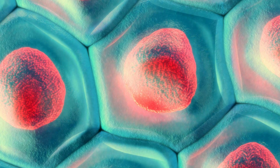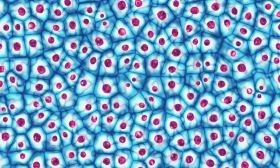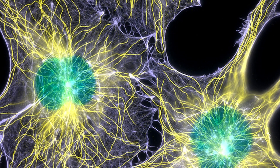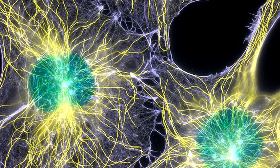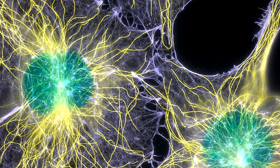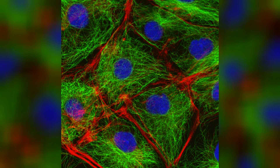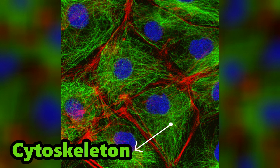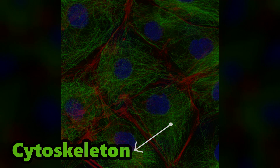In this way, the cell membrane acts as a communication hub, coordinating the activities of individual cells and ensuring the overall functioning of tissues and organs. Additionally, the cell membrane provides structural support to cells. It helps maintain cell shape and integrity by anchoring the cytoskeleton, a network of protein filaments, to its inner surface.